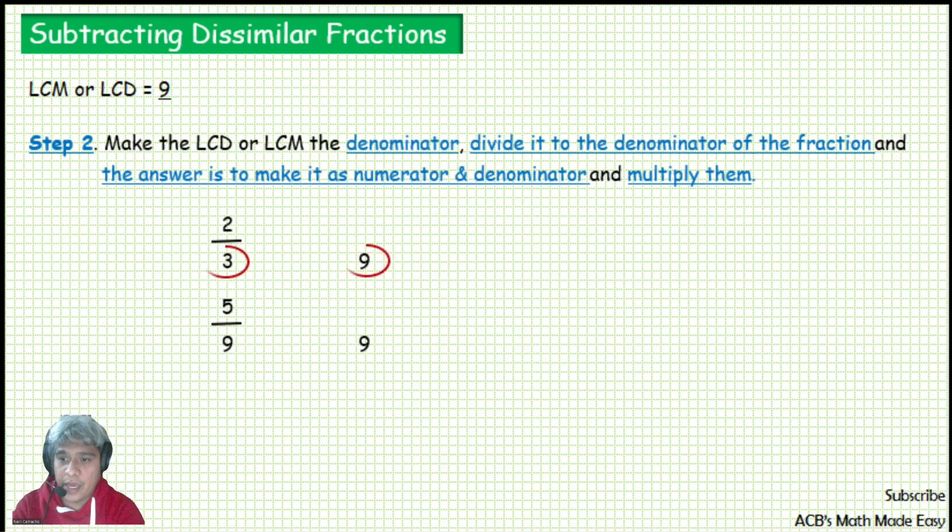9 divided by 3 is equal to 3. Make it as the denominator 2. Multiply them. 2 times 3 is equal to 6. So, our answer is 6 over 9.